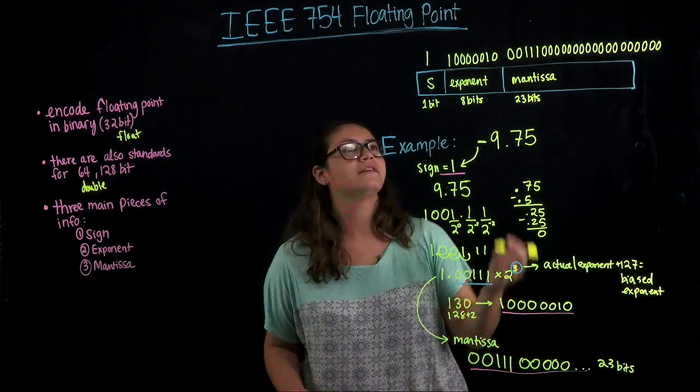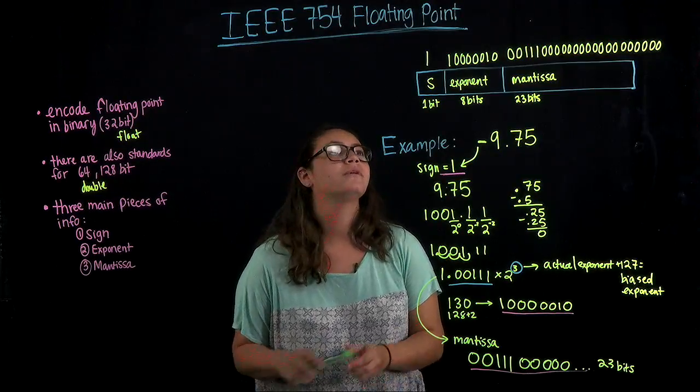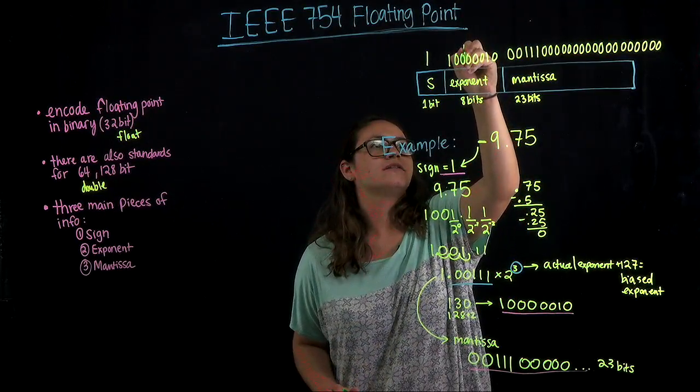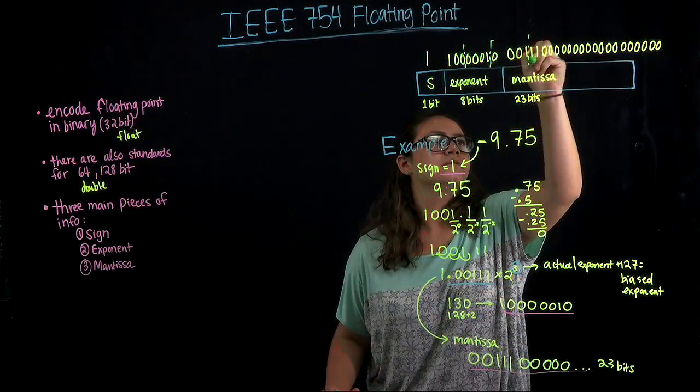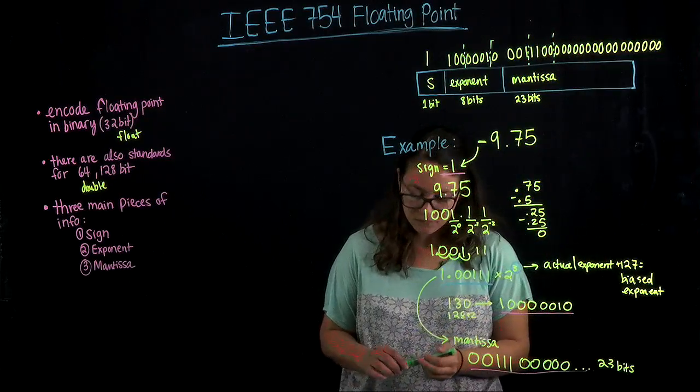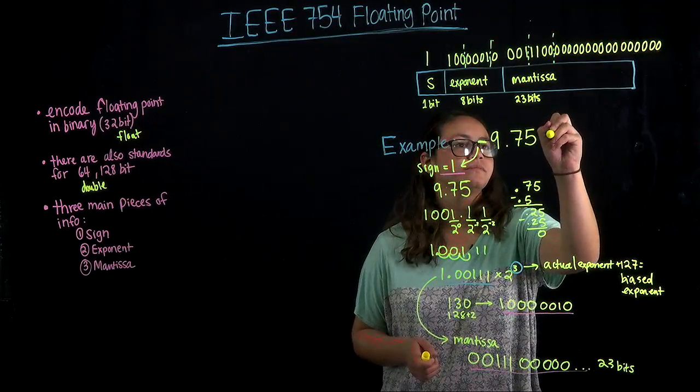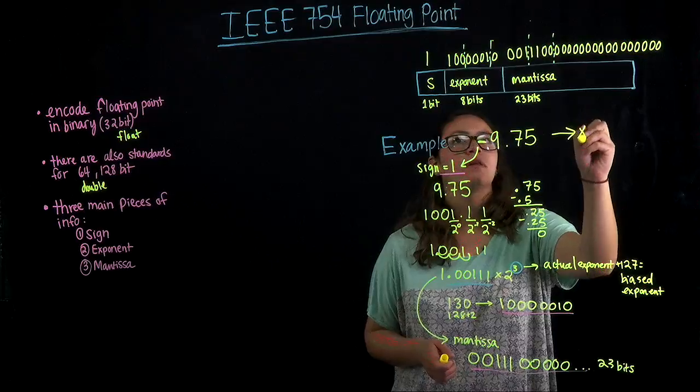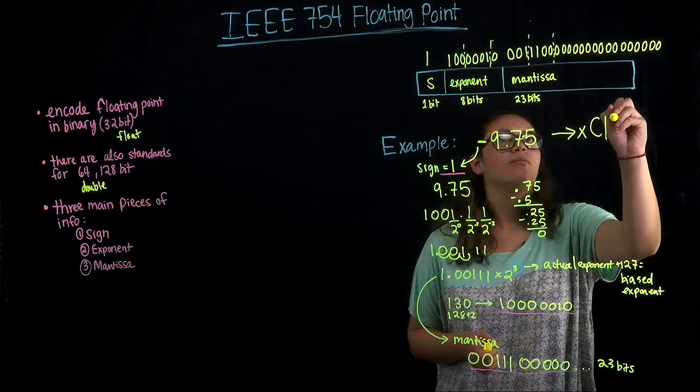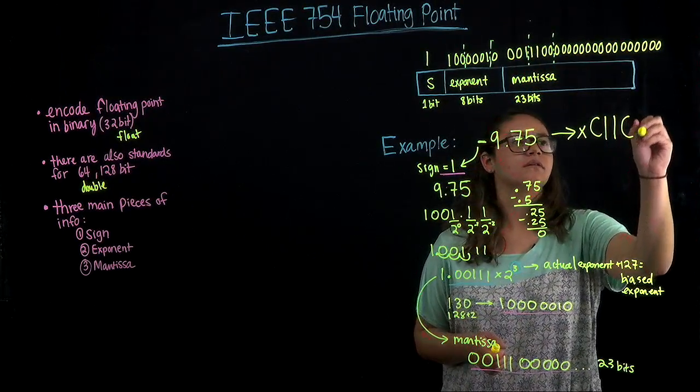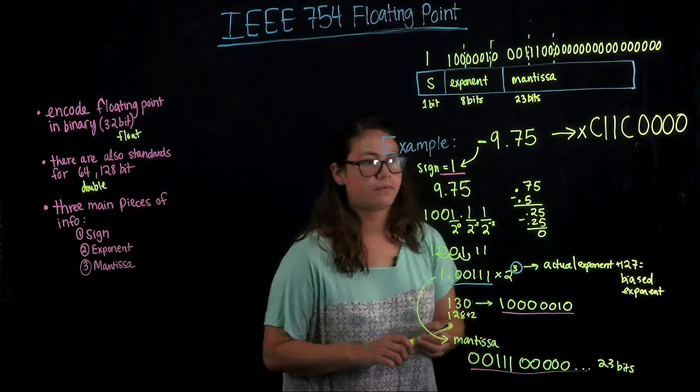And then a common way that this gets written is in hexadecimal. For hexadecimal, we just want to separate it into packets of 4. So our final answer would be hexadecimal C1C00000.